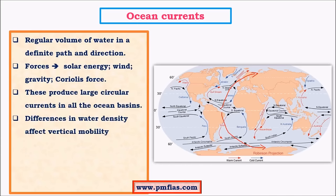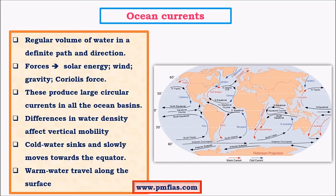There are two kinds of ocean currents: horizontal and vertical. Horizontal ocean currents are those we see on surface maps. Vertical ocean currents mainly occur due to differences in temperature and salinity. Cold, high-salinity water is denser and falls to the bottom layers, while warmer, less saline water is less dense and rises to the top. This is essentially convection. Convection influences vertical water movement, while horizontal movement is mainly influenced by permanent winds.